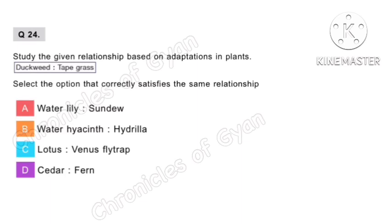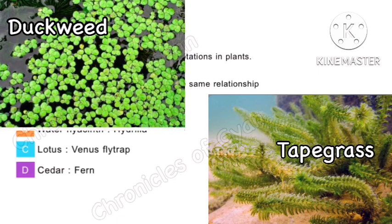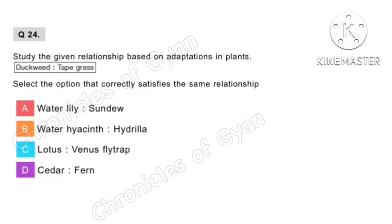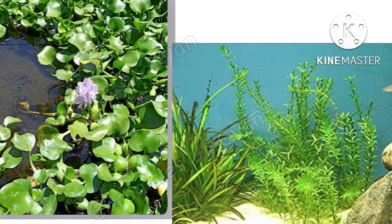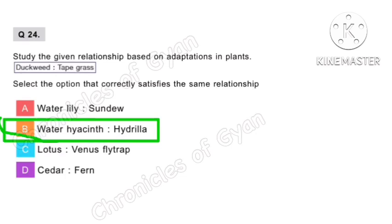Question 24. Study the given relationship based on adaptations in plants: Duckweed is to tapegrass. Duckweed are the smallest flowering plants and are aquatic floating plants. Tapegrass grows fully submerged in fresh or brackish water. Similarly, water hyacinth is also an aquatic floating plant, and hydrilla is fully submerged in water. So option B is the correct answer.